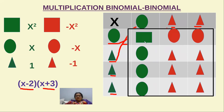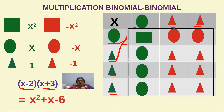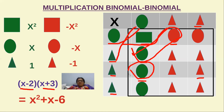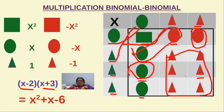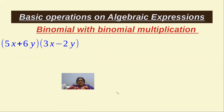In the answer box we have 1 x². Looking carefully, the plus x cards cancel with the minus x cards, leaving 1x remaining. There are 6 minus 1 cards: 1, 2, 3, 4, 5, and 6. So the answer for the binomial times binomial multiplication (x − 2)(x + 3) is x² + x − 6.